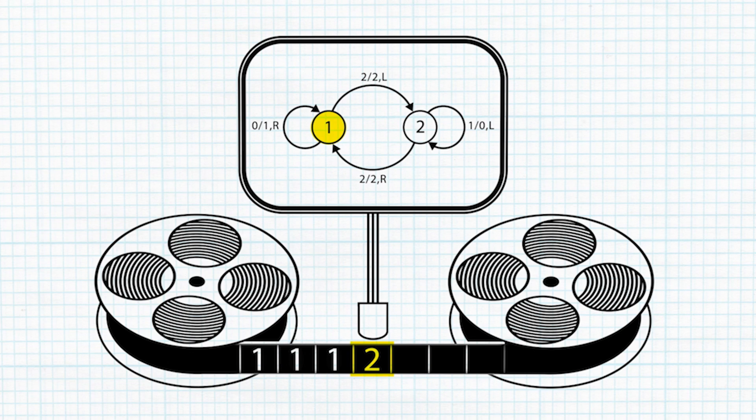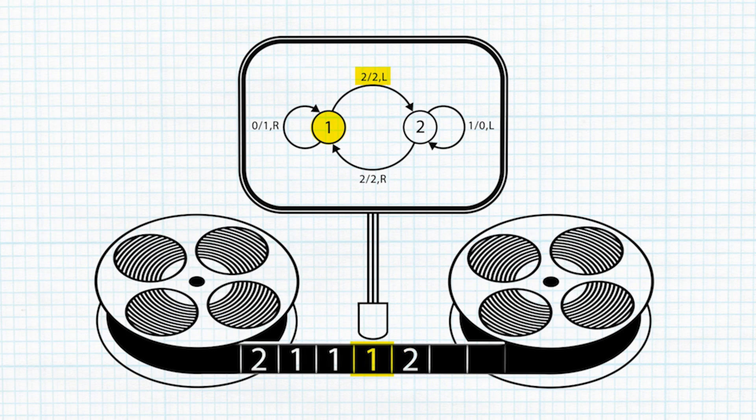This goes on and on until the playhead encounters the number two. The diagram has instructions for what to do there too. This time, the number two becomes two — really just stays the same. We then move the head left and change the machine to state number two.